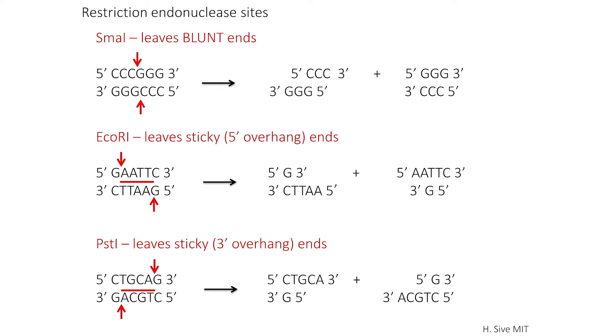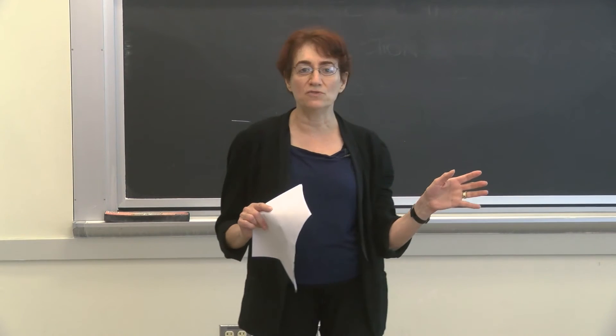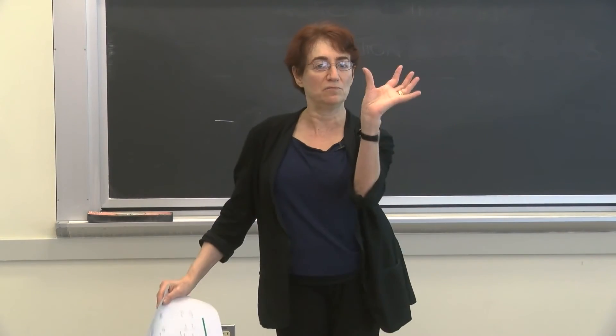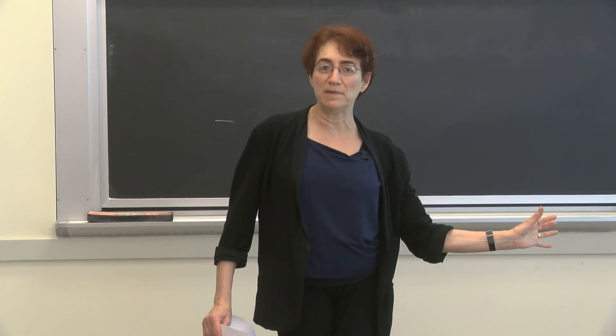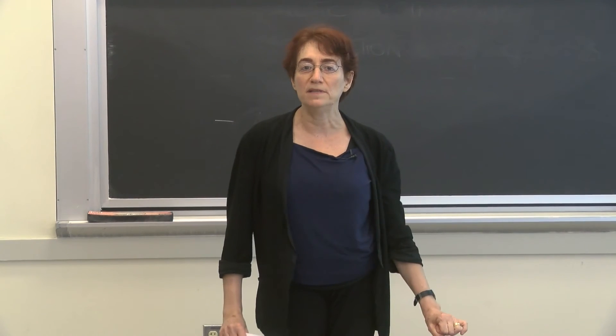I've redrawn for you the SMA1 or EcoR1 sites. And then on the bottom of this slide, I've also put in another site which leaves sticky 3' overhang ends, and this is PST1. You can see here that there is extra unpaired single-stranded DNA sticking out towards the 3' end of each of the ends of the cut DNA. One thing I want to emphasize is that these restriction endonuclease sites are in a whole big piece of DNA. We draw them just as the 6-base pair, or the 4-base pair, or the 8-base pair cut site, but of course they are joined to long pieces of DNA on either side. Now you've had some information about restriction endonucleases. I want you to go to the class assignment and practice doing some restriction enzyme work.